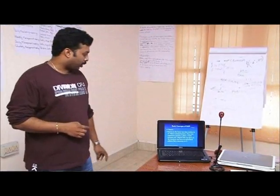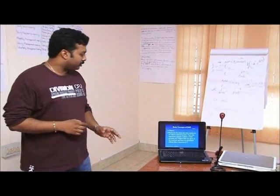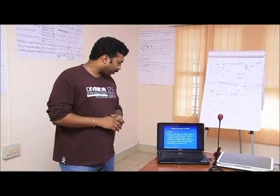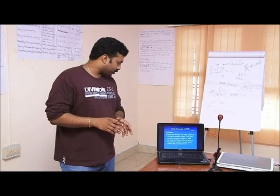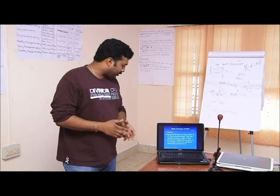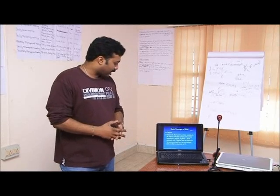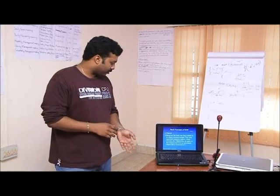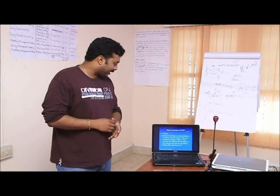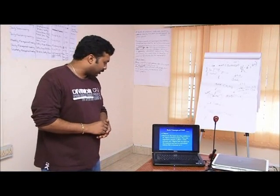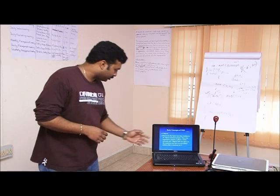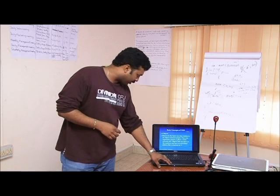Objects are the basic run-time entities in an object-oriented system. They may represent a person, a place, a bank, a code, etc. Objects take up space in memory and have an associated address, like a structure in C.